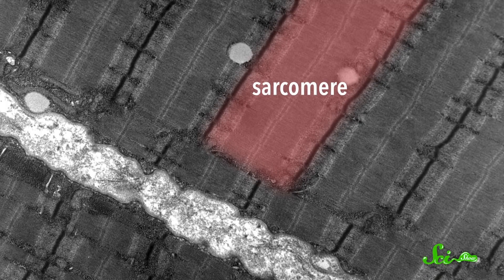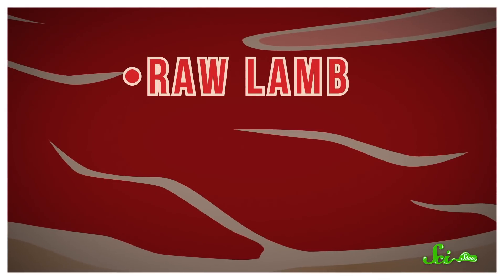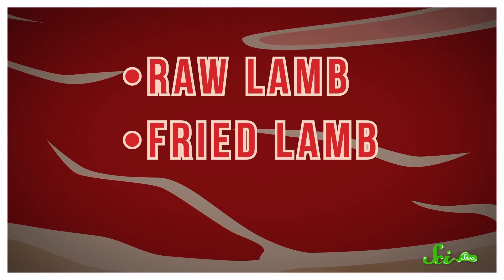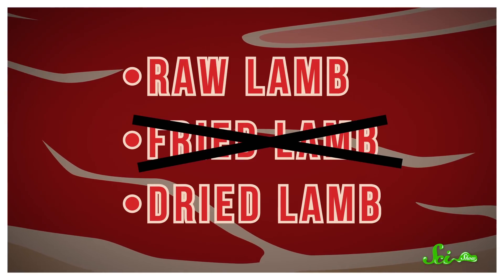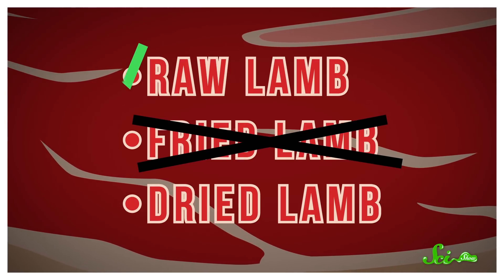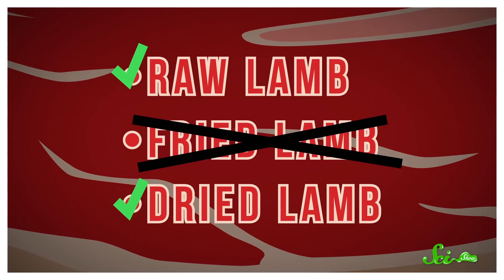For comparison, the team used the same microscope to image some raw lamb meat and lamb they had fried or air-dried. The cooked meat didn't have striations anymore, which means there's a good chance that the iceman's food was fresh or dried when he ate it. Researchers had previously found charcoal particles in the iceman's intestines, so they had assumed that the meat he ate was cooked.